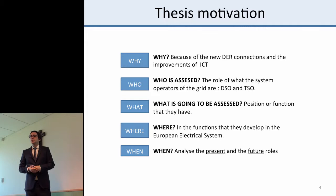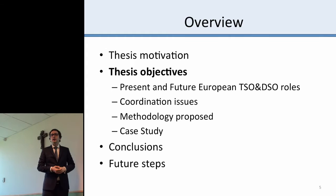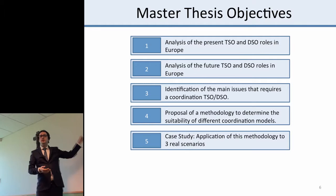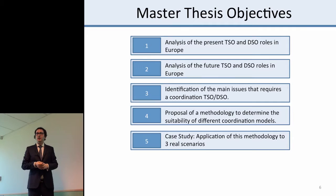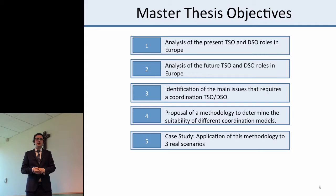Let's see which are the thesis objectives. There are five objectives. The first and the second are the analysis of the present and future DSO and TSO roles in Europe. Later on, we will analyze if there is any overlap area that will need coordination. Then, we will propose a methodology in order to address this coordination issue among both DSO and TSO. And finally, we will apply this theoretical methodology into a practical case study.